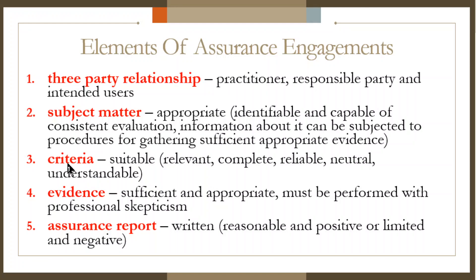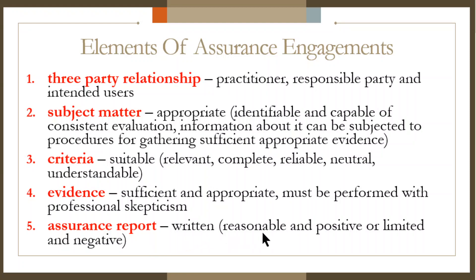The third element is criteria, which should be suitable — meaning it is relevant, complete, reliable, neutral, and understandable. Fourth, we have evidence. Sufficient and appropriate evidence is needed, and it should be gathered with professional skepticism. Fifth, we have the assurance report, which should be a written report that could either be reasonable and positive, or limited and negative. Remember, all these five elements should be present for an engagement to be identified as an assurance engagement.